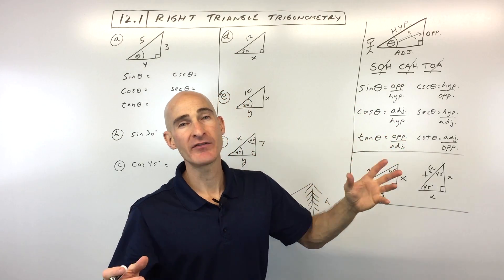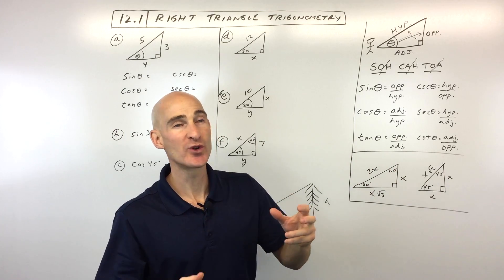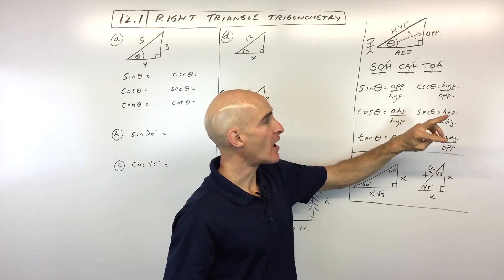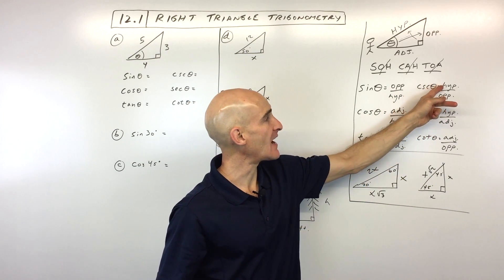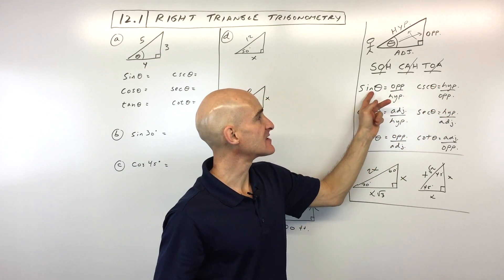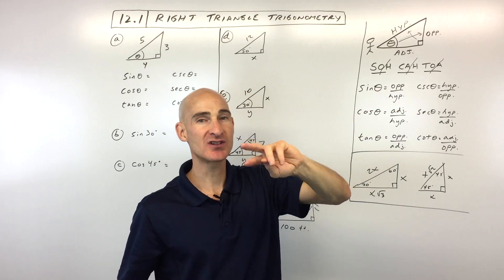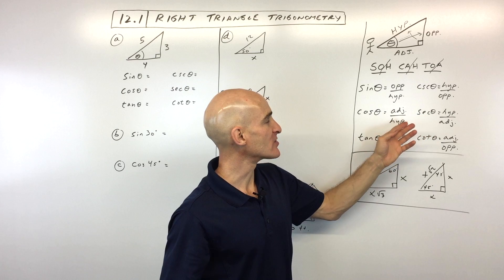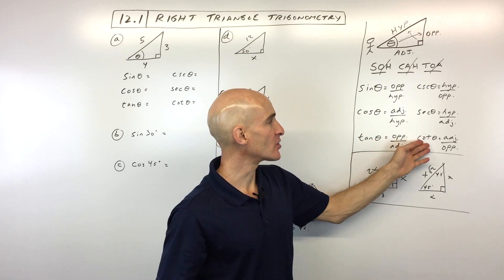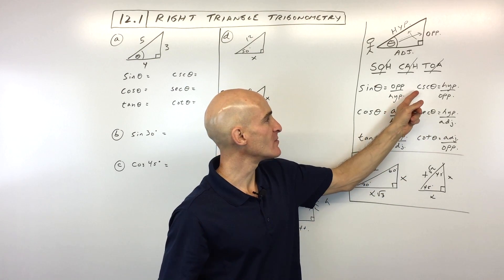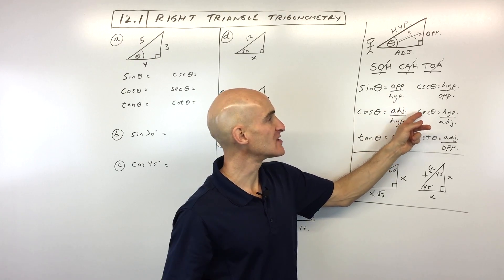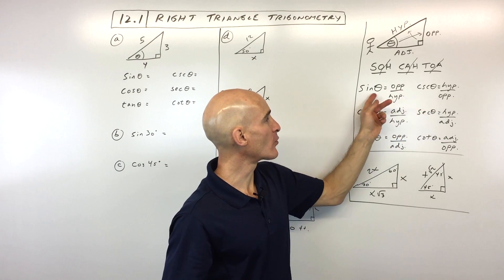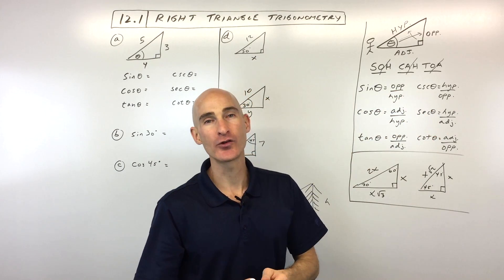The trouble that students oftentimes have is remembering which one goes with which. Just remember the sine and the cosecant are reciprocals, so the cosecant is the hypotenuse over the opposite. The cosine and the secant are reciprocals of one another, and the tangent and the cotangent. The ones students usually make a mistake on are the cosecant and the secant because they sound very similar, but if you can remember one of the pairings, you'll automatically know the other one.